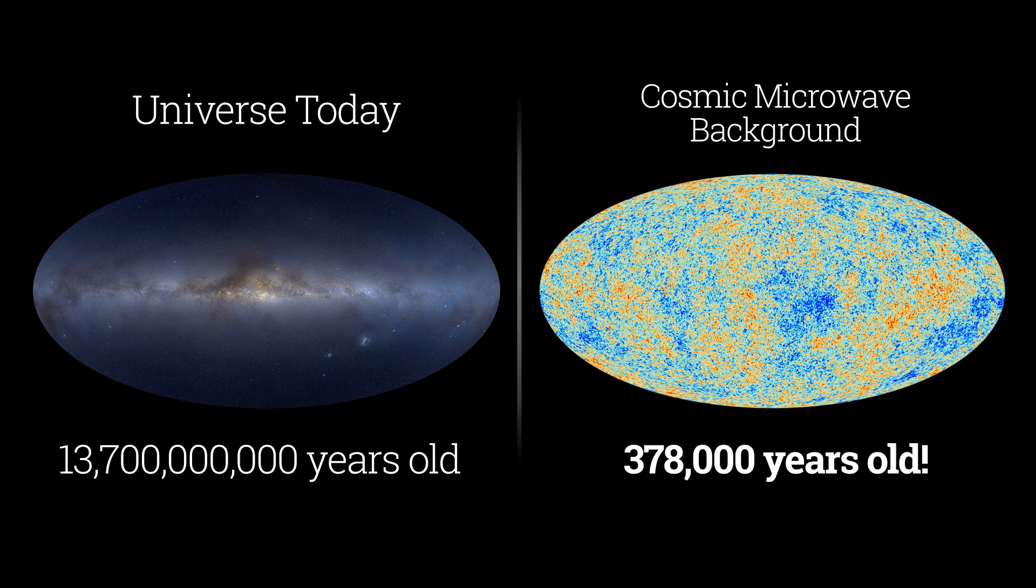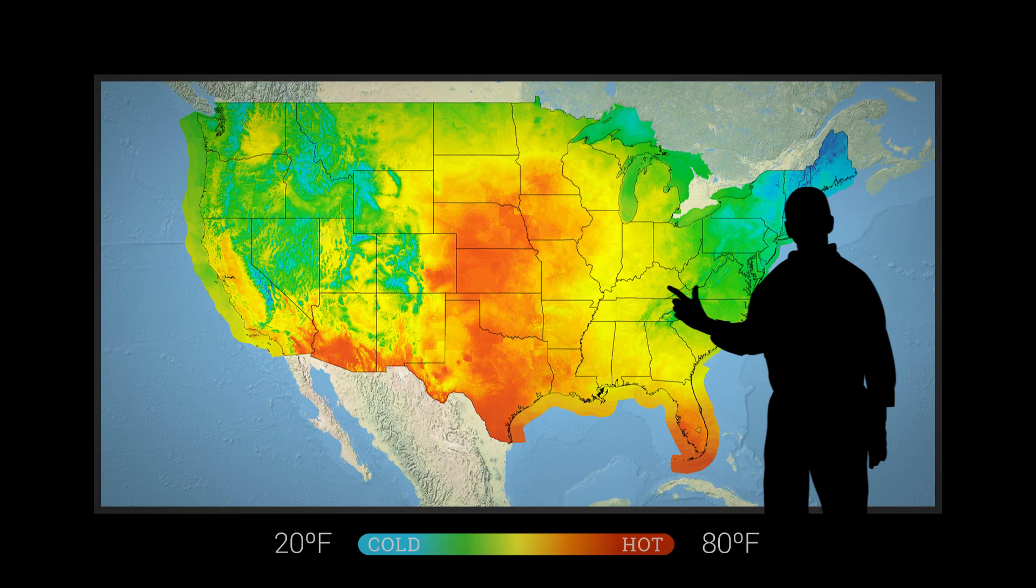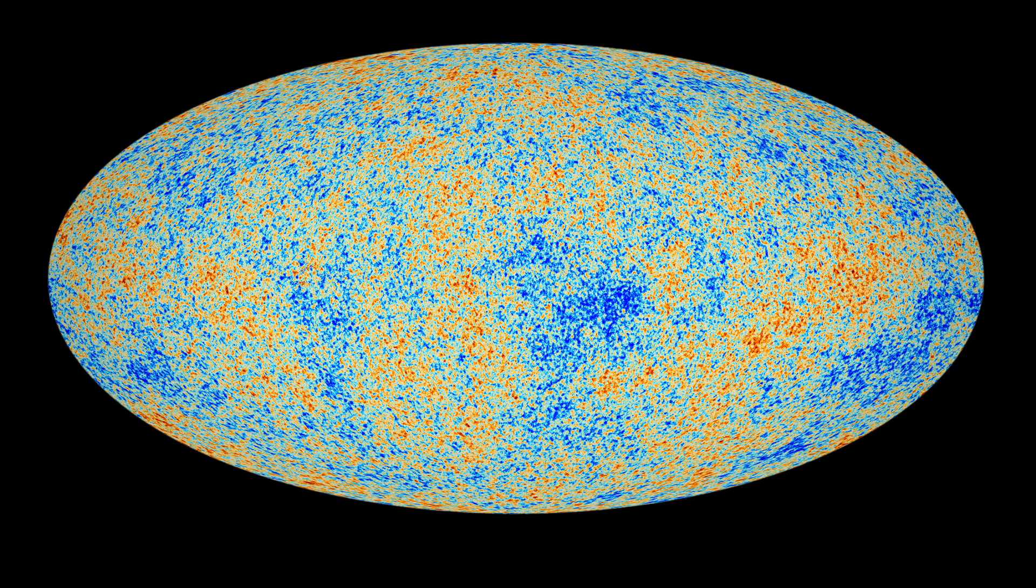The image is similar to a temperature map of the United States, but instead of showing a wide range of temperatures, the cosmic microwave background shows tiny, almost imperceptible temperature differences in the newborn universe.